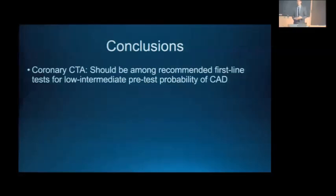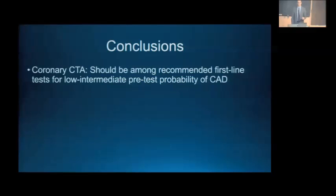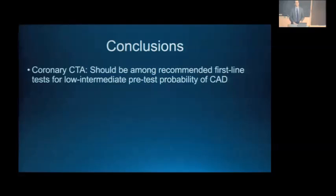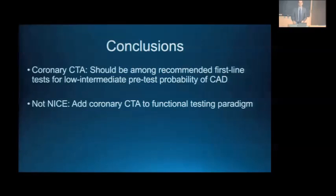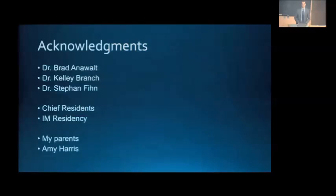In conclusion, coronary CTA has a rationale for use especially in patients with low-to-intermediate pre-test probability. I believe it should be among the first-line testing options for these patients. However, I don't think we should follow the NICE guidelines in completely abandoning functional tests — rather, coronary CTA should be an additional option, and we should work toward a melding of the two strategies together rather than abandoning the whole paradigm of functional testing.